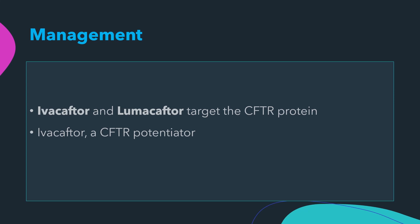Ivacaftor targets gating defects in disease-causing CFTR mutations including G551D. It increases the open probability of CFTR channels and has been shown to improve clinical outcomes such as lung function, weight, and lung disease stability in cystic fibrosis patients older than six years. Lumacaftor is a CFTR corrector.